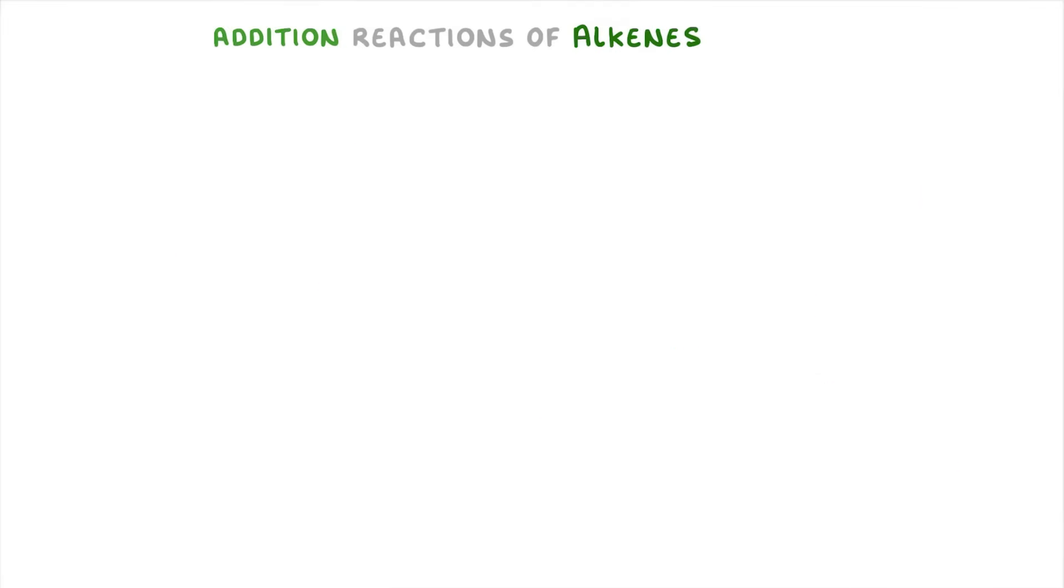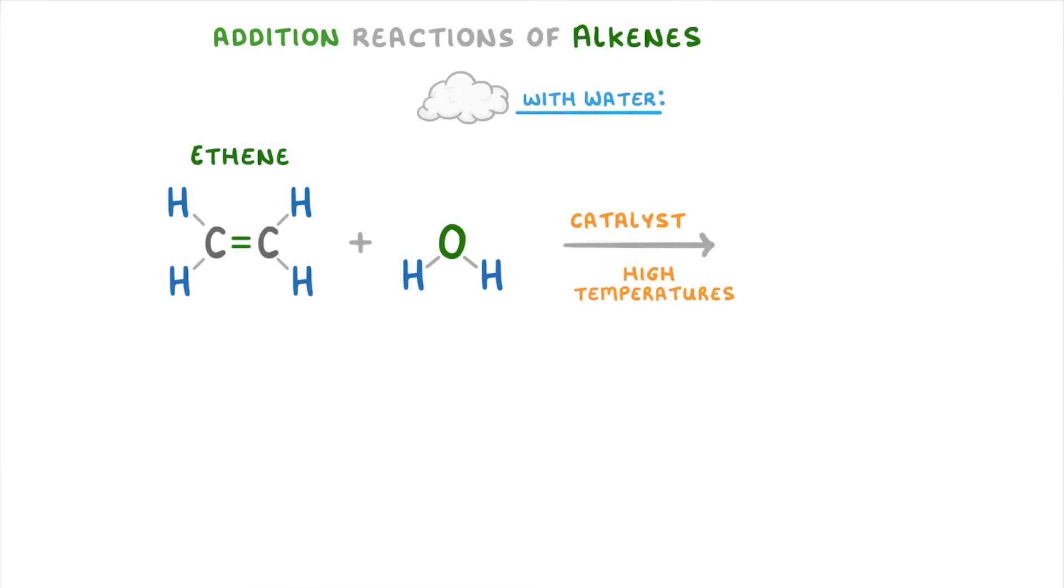Next up we have the reaction of an alkene with water, and this time we have ethene as our alkene. The conditions for this reaction are the presence of a catalyst and high temperatures, so that our water will actually be in the form of water vapor or steam.